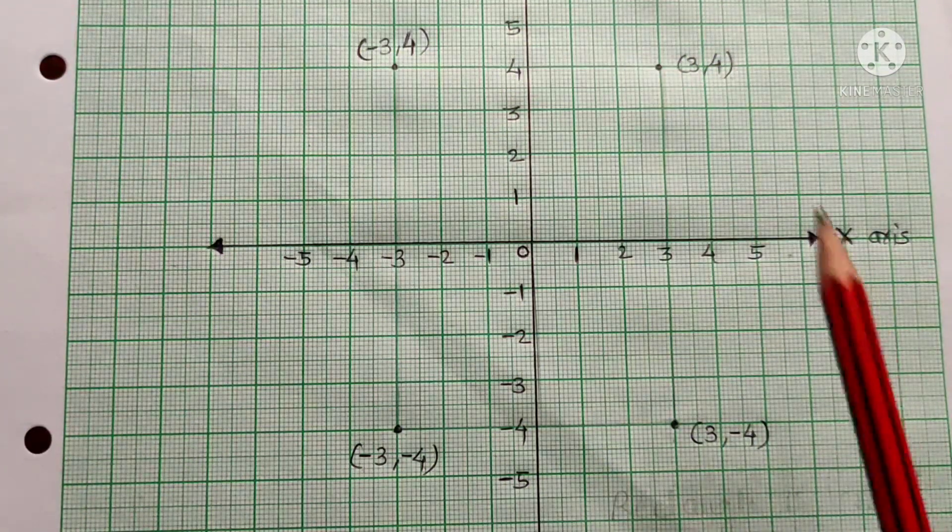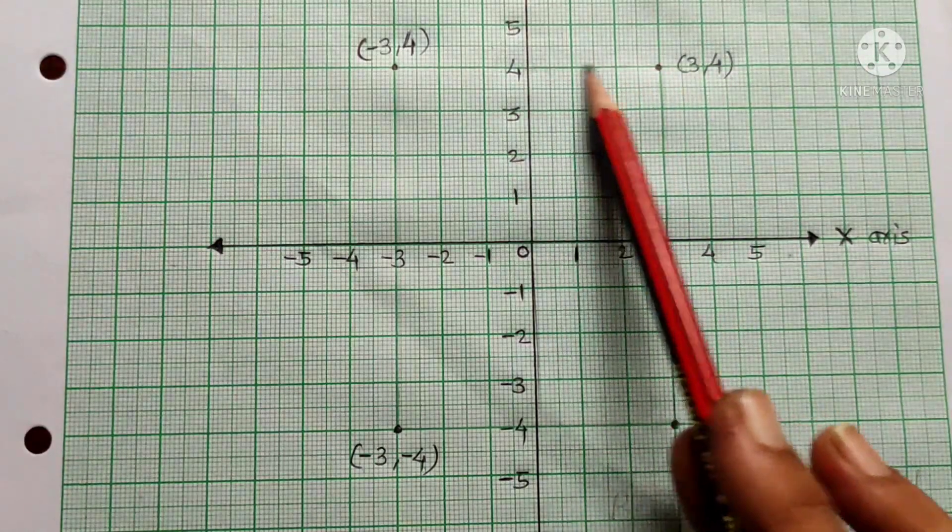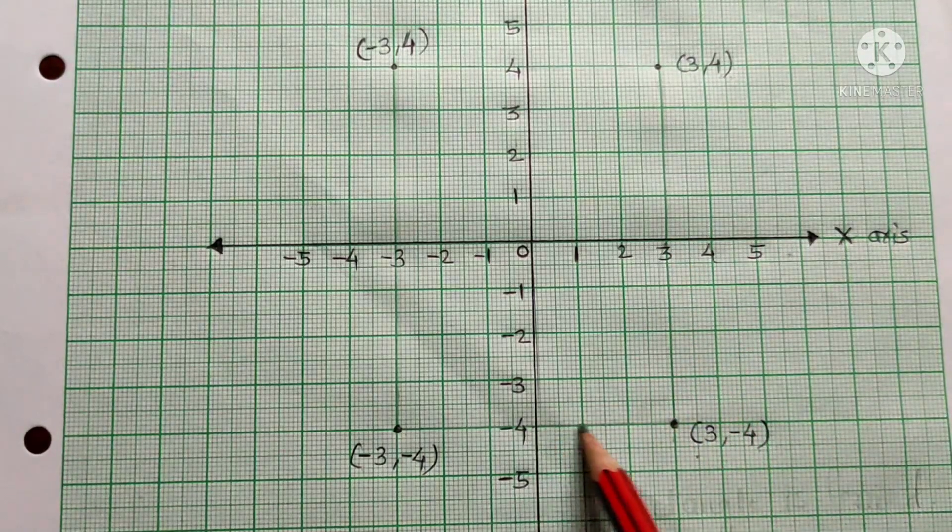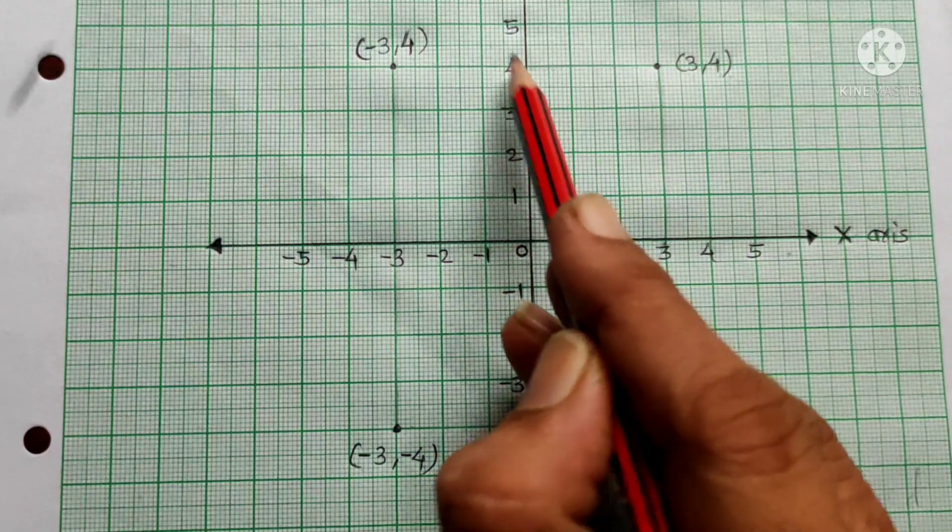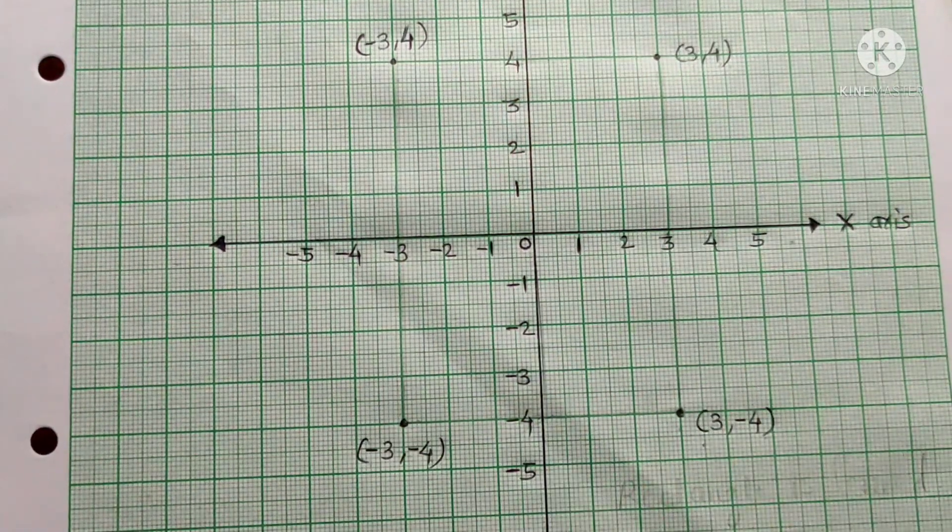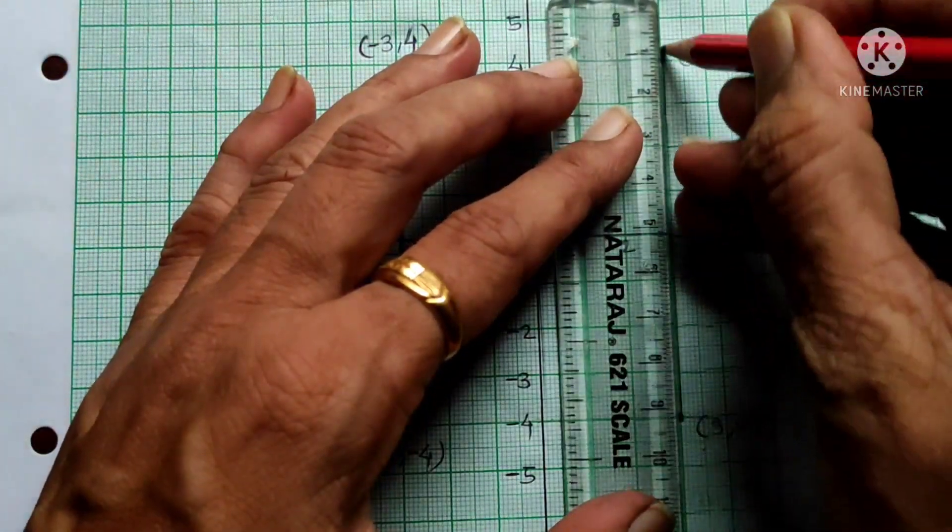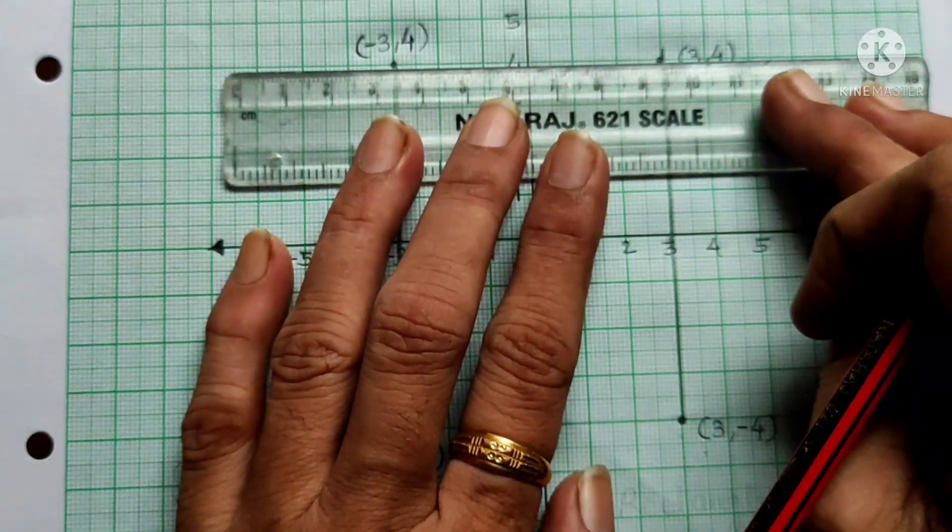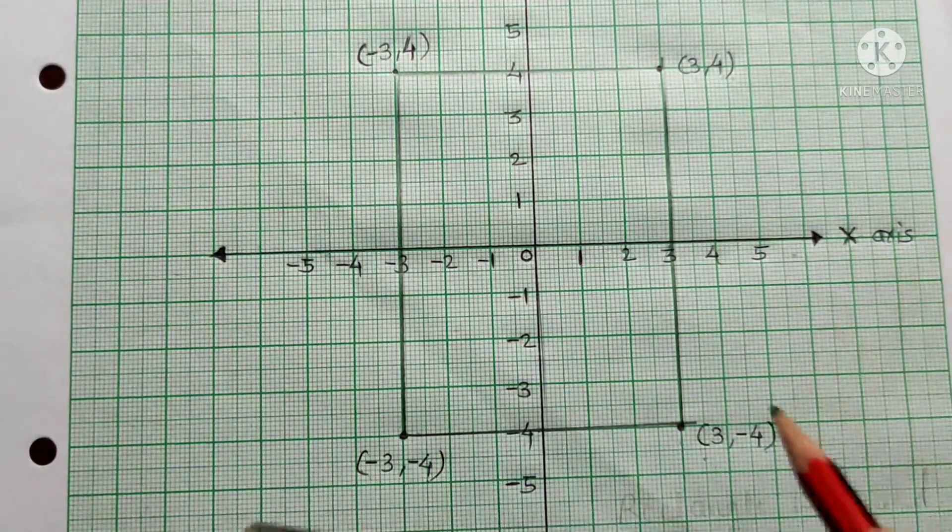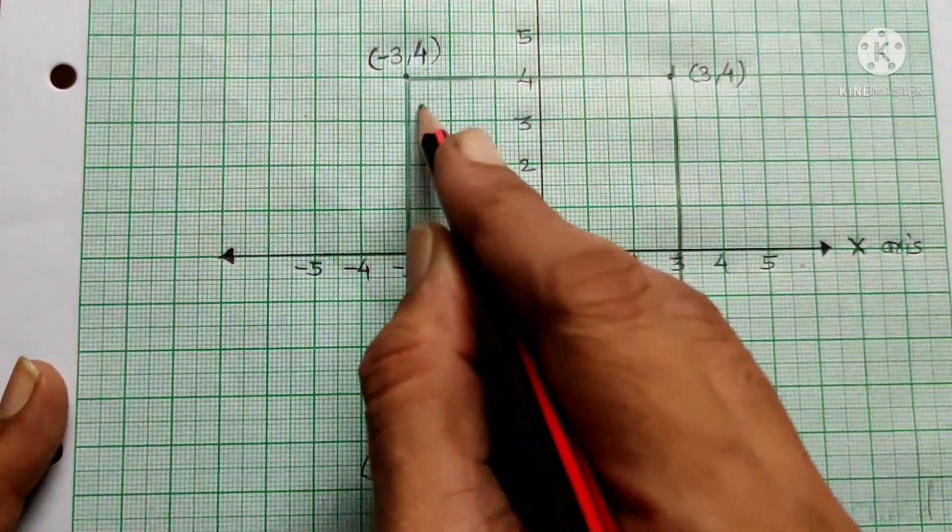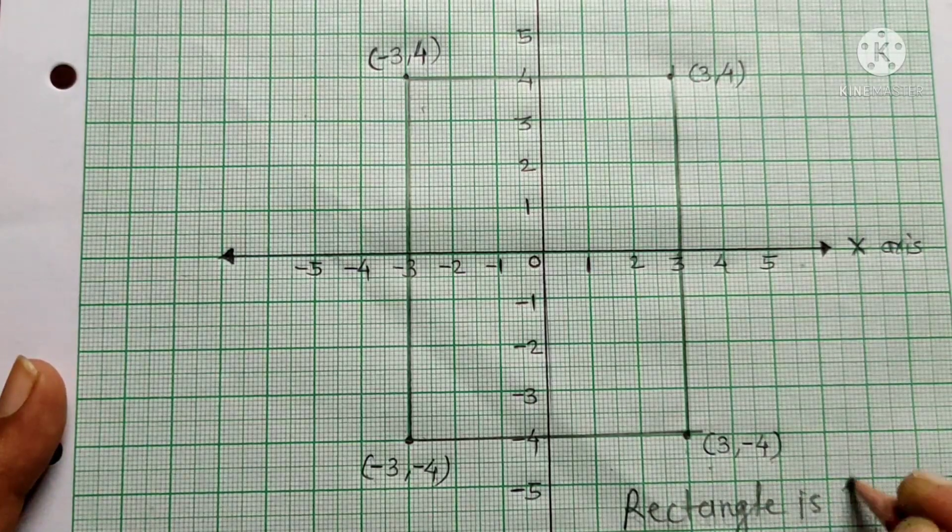Question 3 part 2: We have 4 points. First is (3, 4), so on the x-axis 3, then y-axis 4. Then (3, -4). Then (-3, -4). Then (-3, 4). We'll join these 4 points. The figure formed is a rectangle.